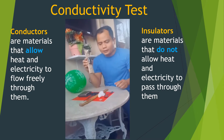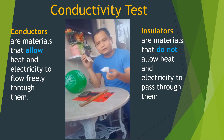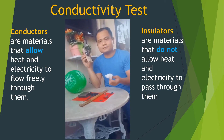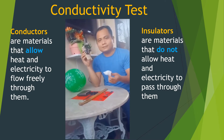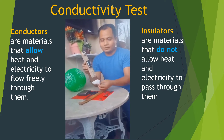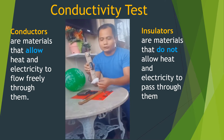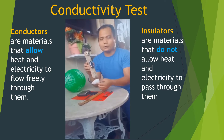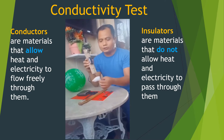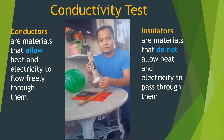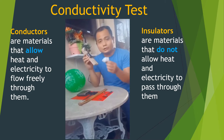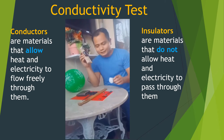Now let's try cotton. Is cotton a conductor or insulator? The light bulb did not turn on, meaning the cotton does not allow electricity to pass through it. That's why the light bulb did not turn on — cotton is an insulator.